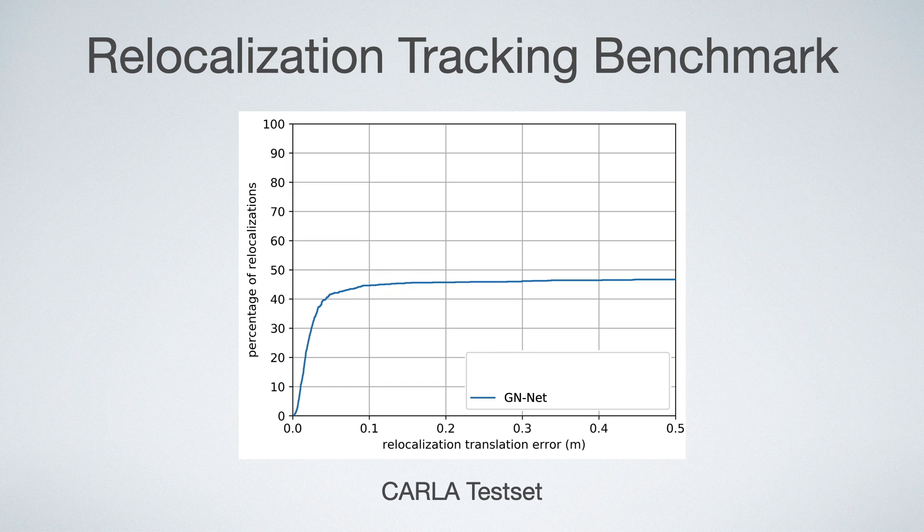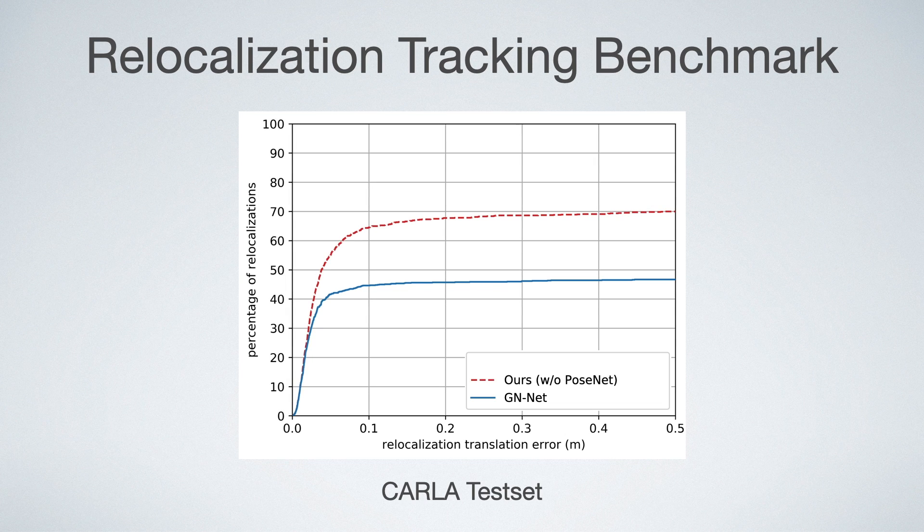On the test data of the benchmark, we compare to the closest work which is GNNet. GNNet also improves direct image alignment with features, but in contrast to this work it is not optimal for Levenberg-Marquardt. Thus, we see a large improvement compared to it.